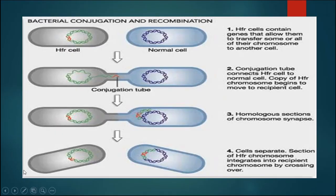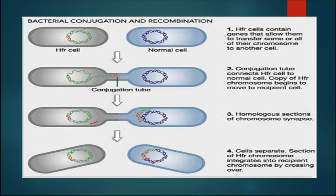This slide shows bacterial conjugation and recombination. Two cells — one donor and one recipient — are connected through a conjugation tube, through which some part of the chromosome is transferred. The transferred chromosome attaches with the recipient's chromosome and undergoes recombination. The recipient now has its own chromosomal DNA as well as DNA from the donor, resulting in a different genetic makeup. This is bacterial conjugation and recombination.